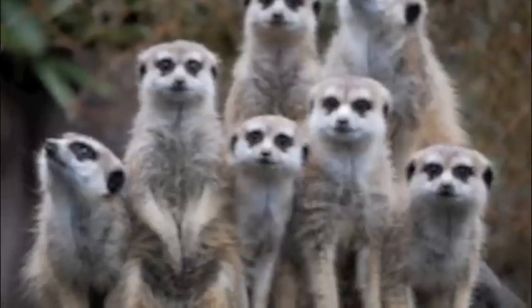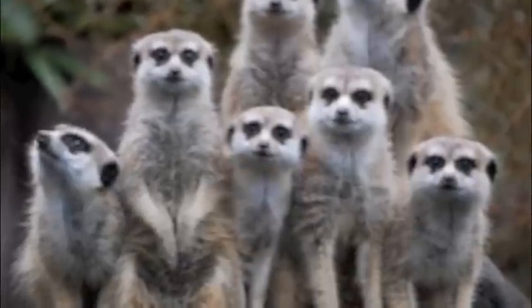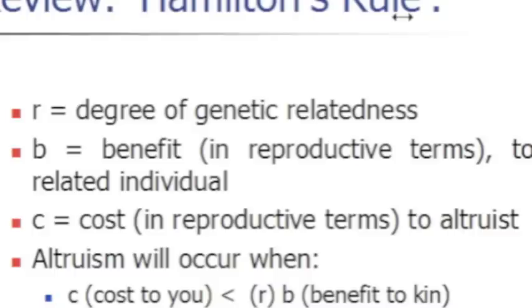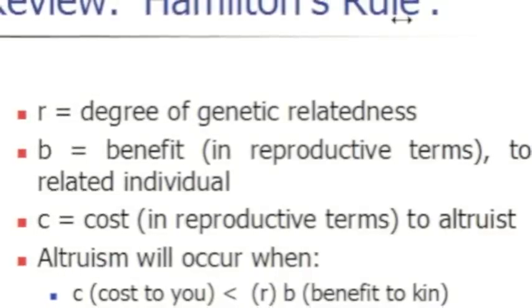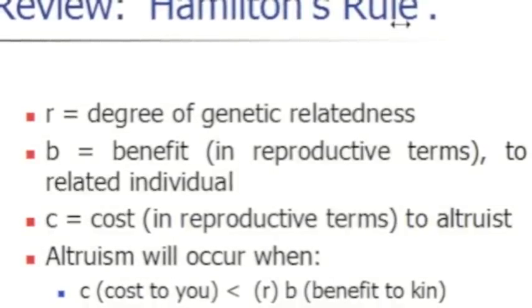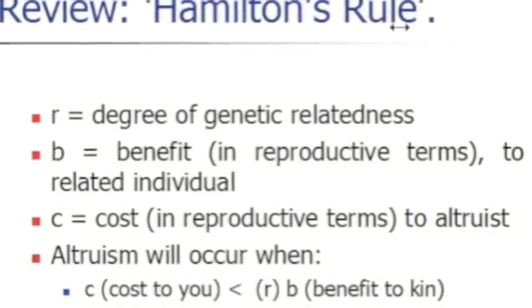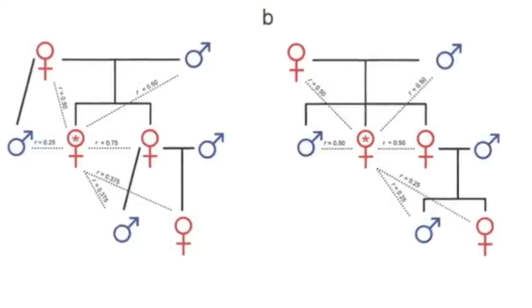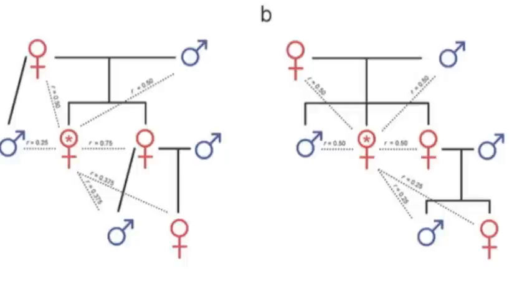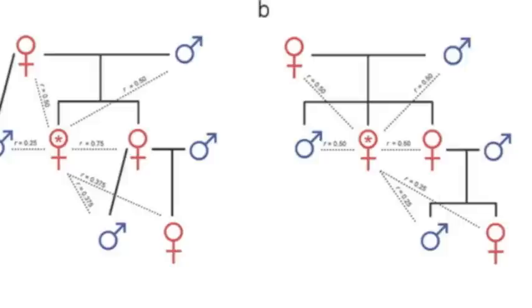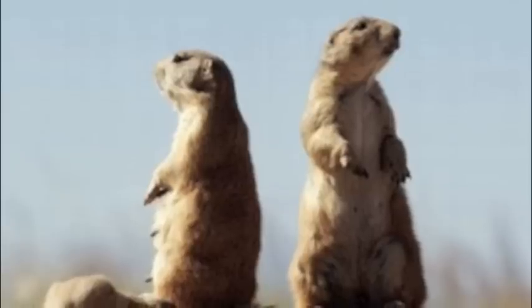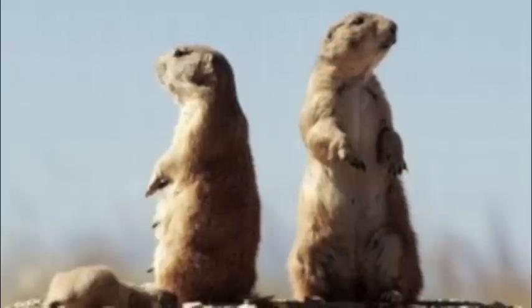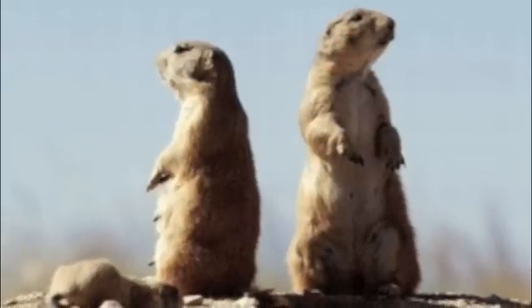Kin selection contrasts natural selection, which makes it difficult to think of it as a method of evolution. For example, in natural selection, if a predator was approaching a group of prairie dogs and one dog spotted the predator, that individual dog would signal a high-pitched call that would alarm the other dogs and simultaneously attract the predator towards itself and away from its family. But this opposes natural selection because the individual that spotted the predator should have run away and protected itself, as it would have followed Darwin's theory of survival of the fittest.